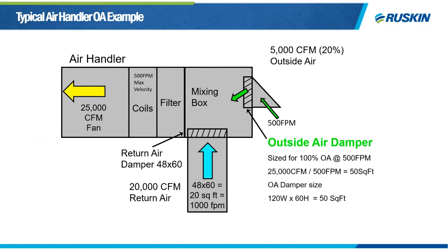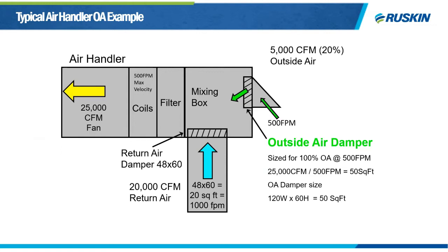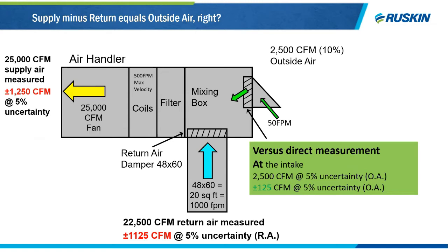Using a typical air handler as an example: outside air openings are sized large enough to prevent moisture carryover and provide 100% outside air. With a supply air rating of 500 feet per minute and a 25,000 CFM band, we would end up with a 50 square foot outside air opening. One method for measuring outside air is using supply and return air, but the large volumes being measured almost guarantee inaccuracy. At a 5% inaccuracy with a 25,000 CFM fan and a 22,500 CFM return air, you end up with uncertainty almost as high as the air you're actually measuring.